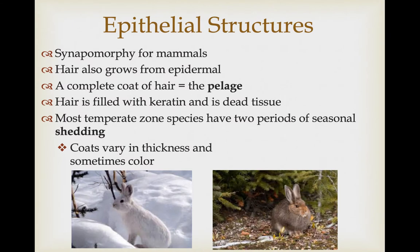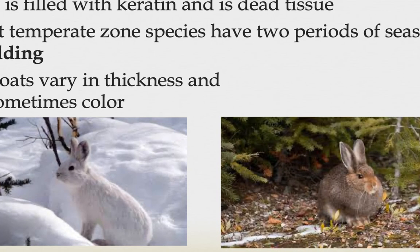Hair is synapomorphic for mammals and also grows from epithelial follicles. A complete coat of hair is called the pelage. Hair is filled with keratin and dead tissue and has to be replaced regularly — the process of losing one set of hair and growing another is called shedding. There can also be variation in color between different pelages of mammals. For example, the snowshoe hare is white in winter and brown in spring and summer, allowing it to be cryptic with the changing seasons.